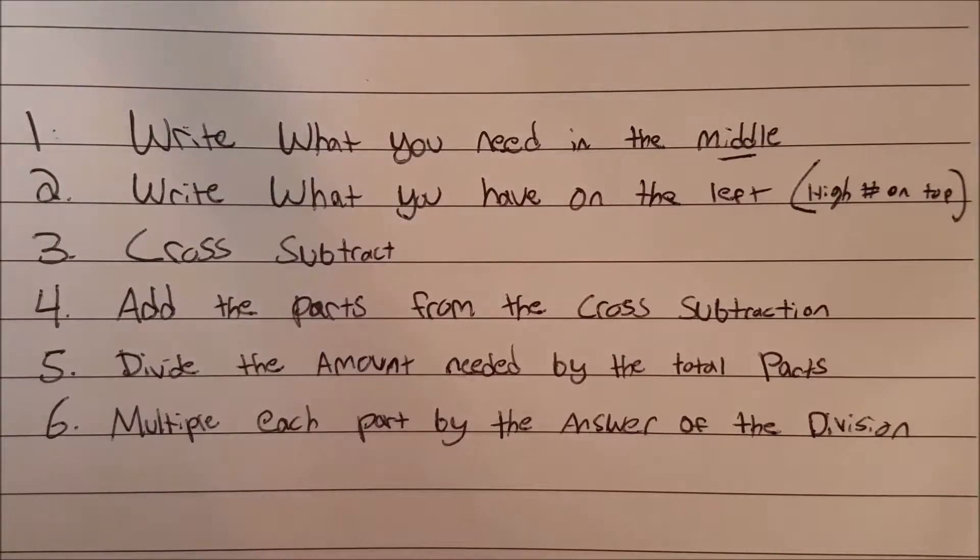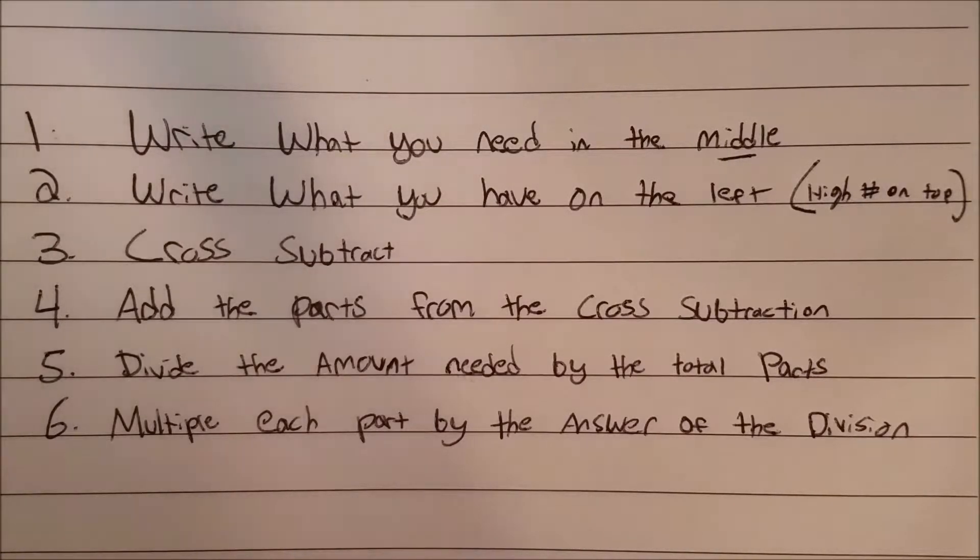The steps are: Step 1, write what you need in the middle. Step 2, write what you have on the left with the high number on top. Step 3, cross subtract. Step 4, add the parts from the cross subtraction. Step 5, divide the amount needed by the total parts. Step 6, multiply each part by the answer of the division. Let me show you guys how to do that.